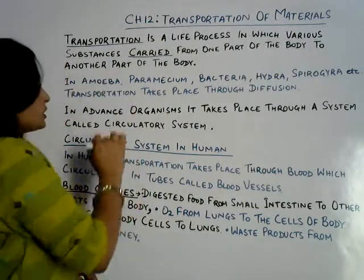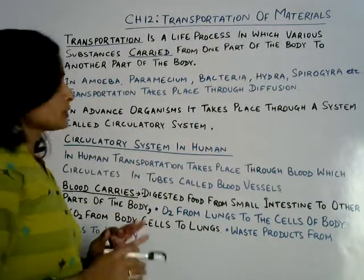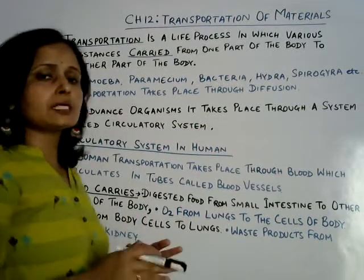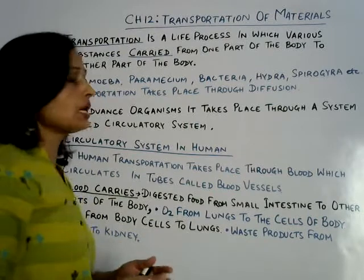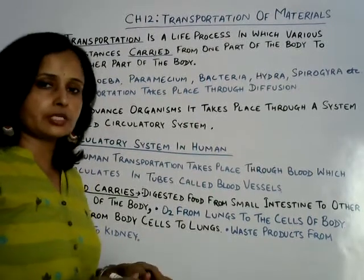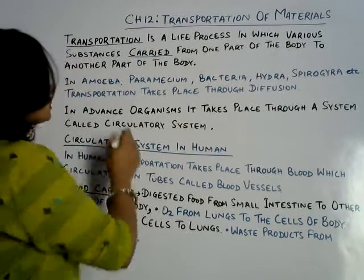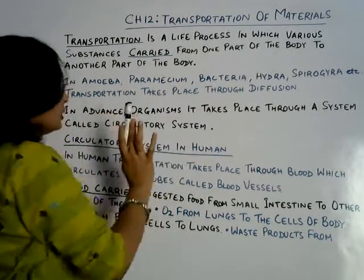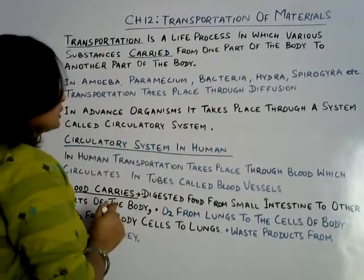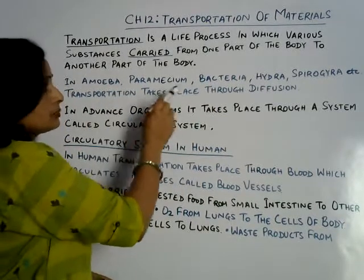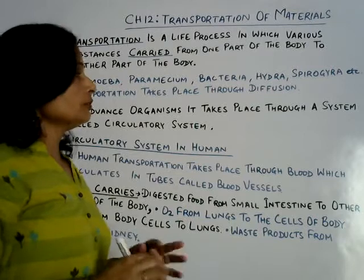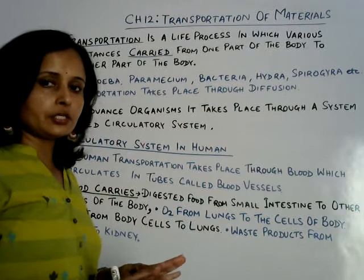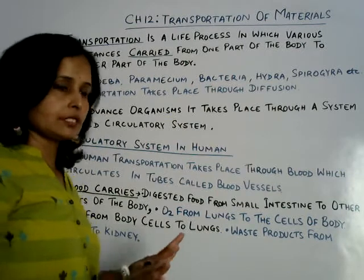Now let us discuss about some simple organisms. In microscopic, unicellular, as well as simple multicellular organisms — such as amoeba, paramecium, bacteria, hydra, and spirogyra — the process of transportation takes place through diffusion only. Through the process of diffusion, from the body surface only, transportation takes place.